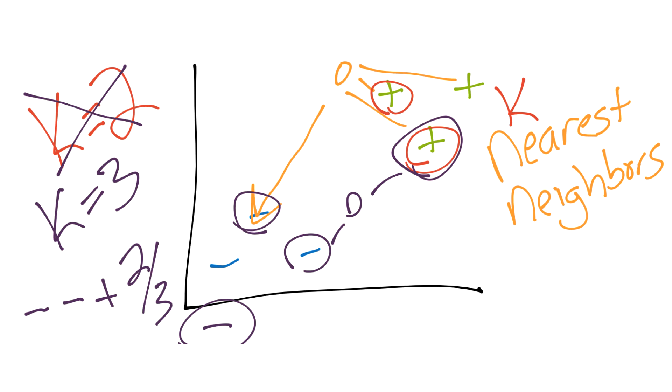That's basically how K nearest neighbors works. It's a super simple algorithm. The other thing you have to think about too, is in this case, we had only two groups.